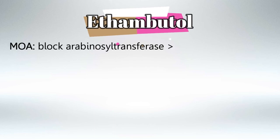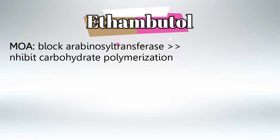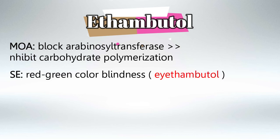Next we have ethambutol. The mechanism of action is that it inhibits arabinosyl transferase enzyme, which inhibits carbohydrate polymerization of the bacteria, thus inhibiting the peptidoglycan synthesis of the bacterial wall. The famous side effect is red-green color blindness. Remember: ethambutol starts with E and eyes start with E as well — ethambutol is for eyes.